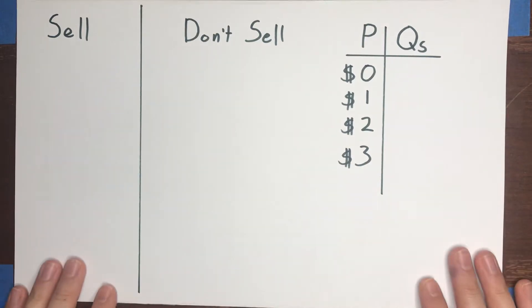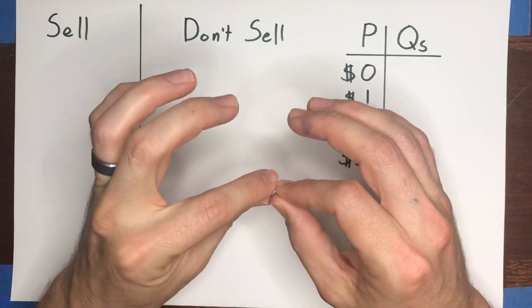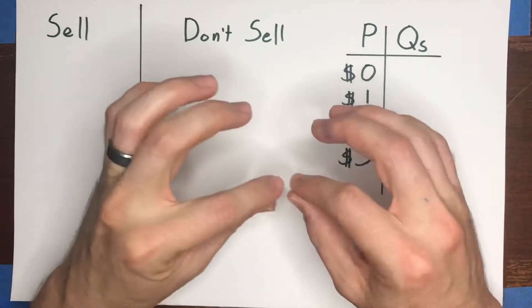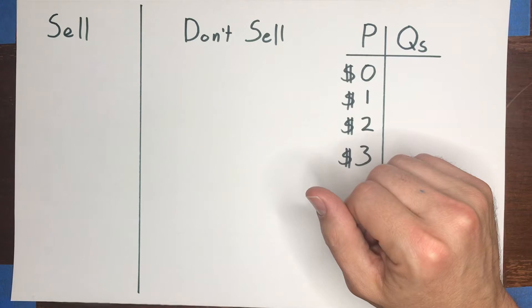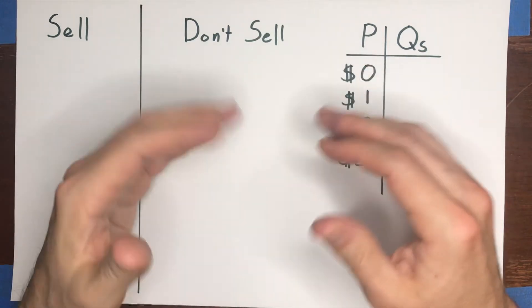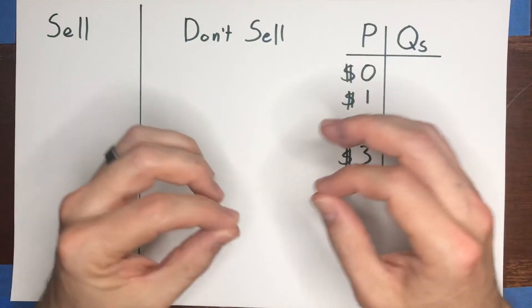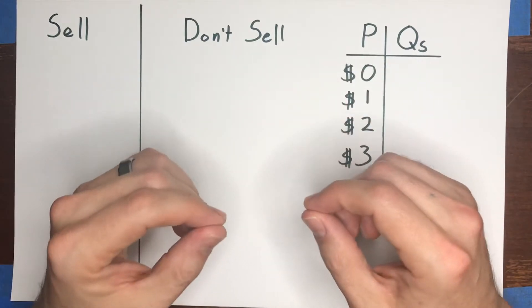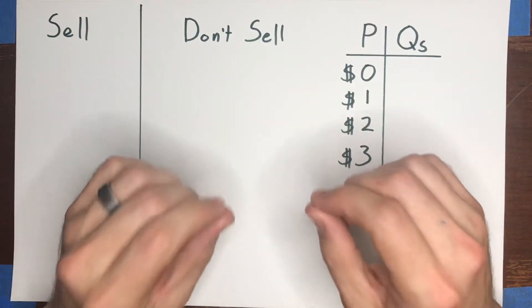So let's start by thinking about what supply is. Remember, demand is essentially looking at the relationship between the market price and the quantity of units that consumers want to buy. For supply, that concept is looking at the relationship between the market price and the number of units that sellers want to sell.